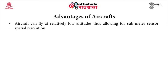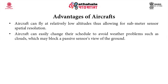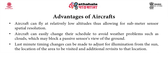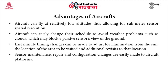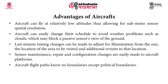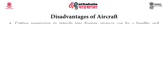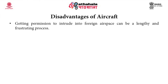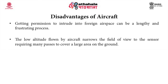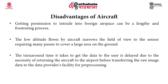The advantages of aircraft include flying at relatively low altitudes allowing for sub-meter sensor spatial resolution, easily changing schedules to avoid weather problems, making last-minute timing changes for sun illumination, and easy sensor maintenance and configuration changes. Aircraft flight paths know no boundaries except political boundaries. Disadvantages include the difficulty of getting permission to intrude into foreign airspace, the narrow field of view requiring many passes to cover a large area, and delayed turnaround time due to the necessity of returning to the airport before transferring raw image data for pre-processing.